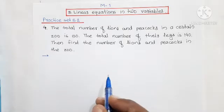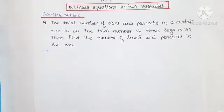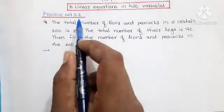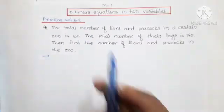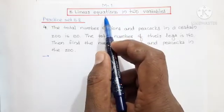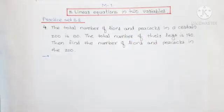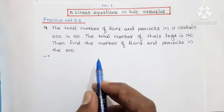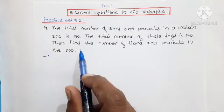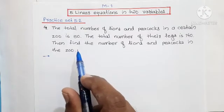Hello friends. In this video we are going to solve the remaining examples in Practice Set 5.2, that is from the fifth chapter of Maths Paper First — Linear Equations in Two Variables. In the previous video we already solved the first three examples from this practice set. Now we are solving from the fourth example onwards.